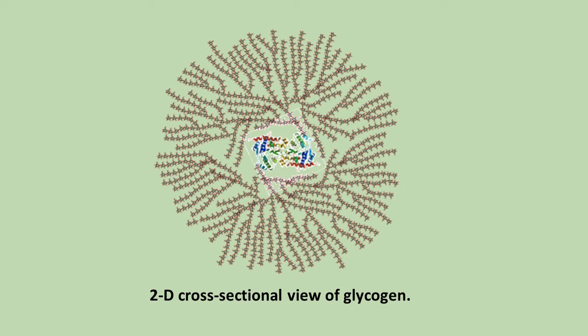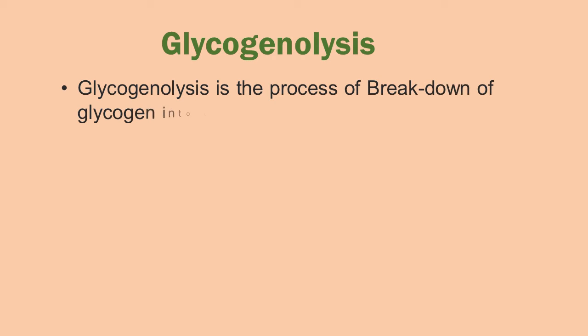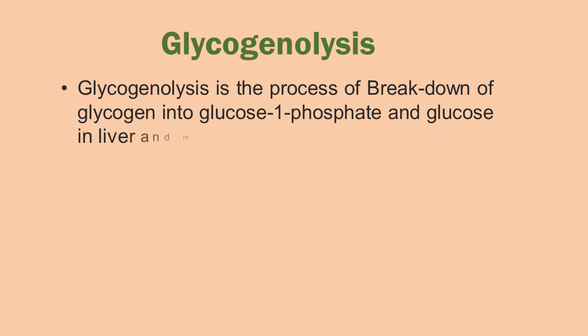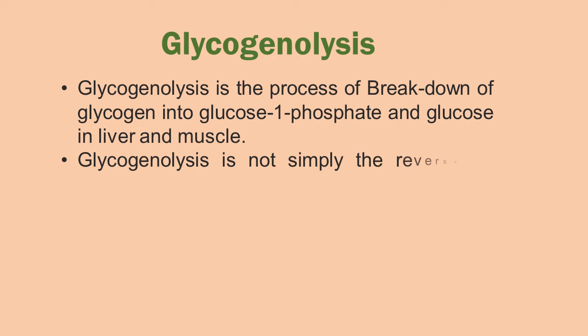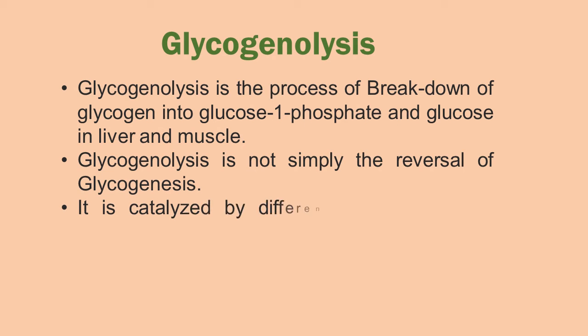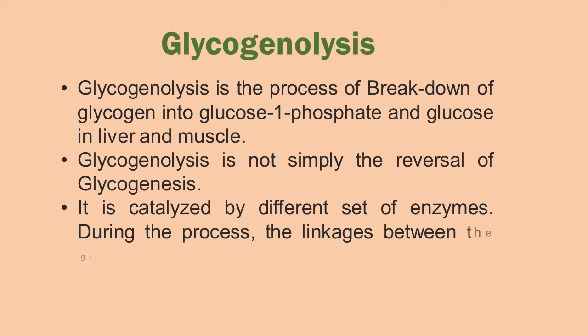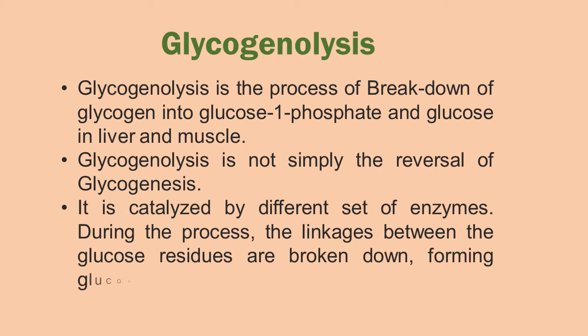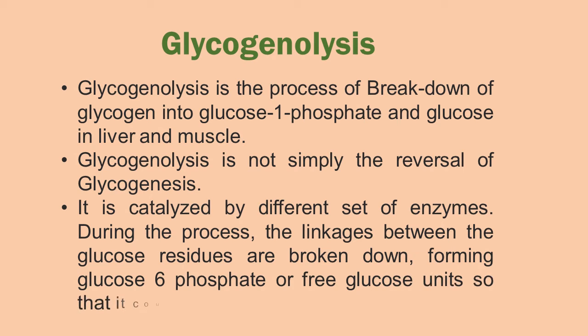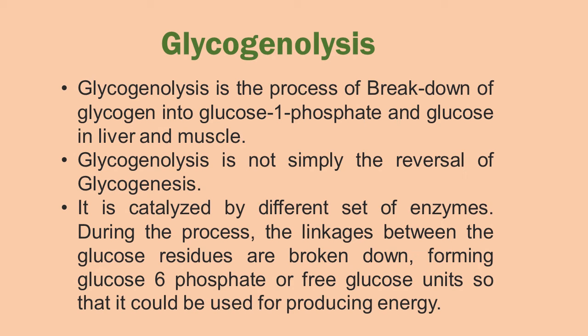Here you can see a two-dimensional cross-section view of glycogen. A core protein of glycogenin is surrounded by branches of glucose units, and the entire globular complex may contain approximately 30,000 glucose units. Glycogenolysis is the process of degradation of glycogen to glucose-1-phosphate and glucose in liver and muscle cells. Remember, glycogenolysis is not the reversal of glycogenesis — it is catalyzed by a different set of enzymes. In this process, the linkages between glucose residues are broken down, forming glucose-6-phosphate or free glucose so that it can enter the glycolysis pathway for producing energy.